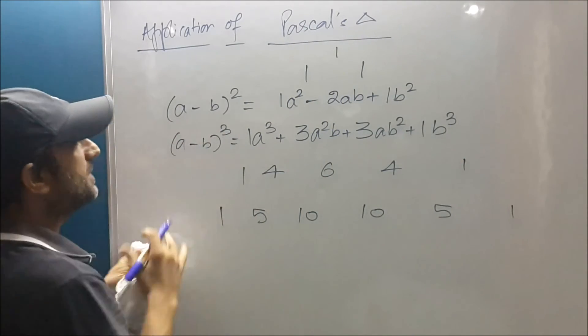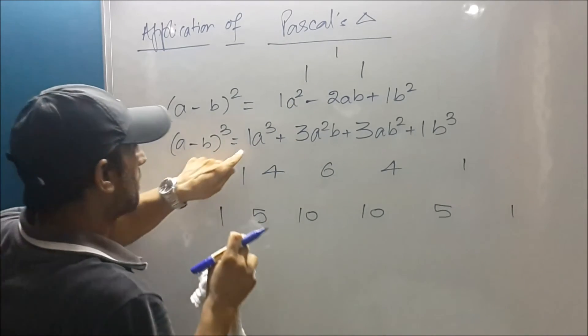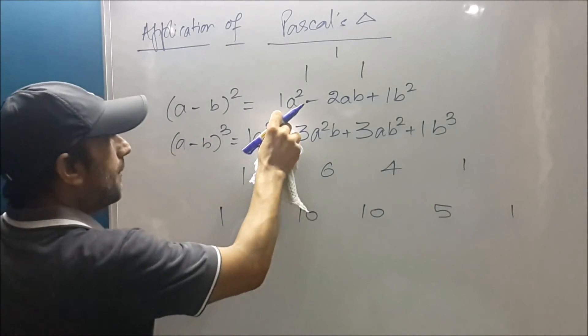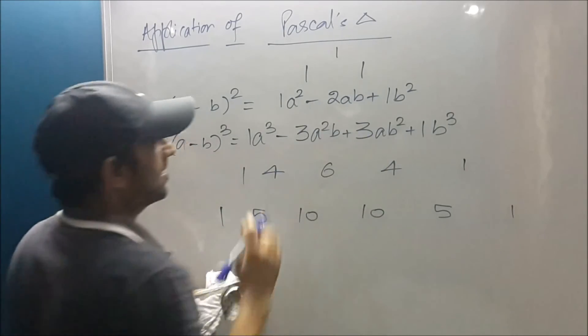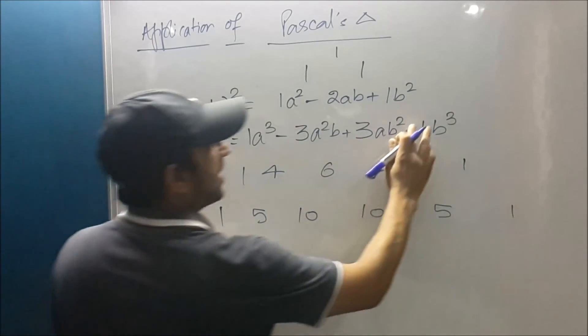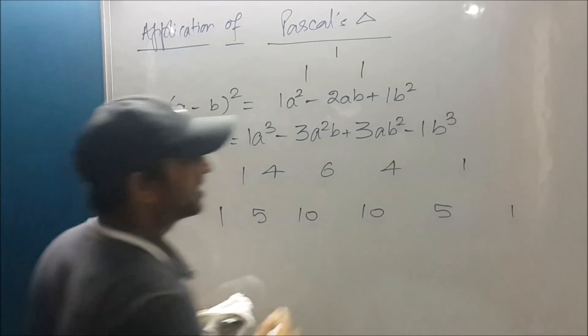If I had to open (a - b)³, my formula will be a³ - 3a²b + 3ab² - b³.